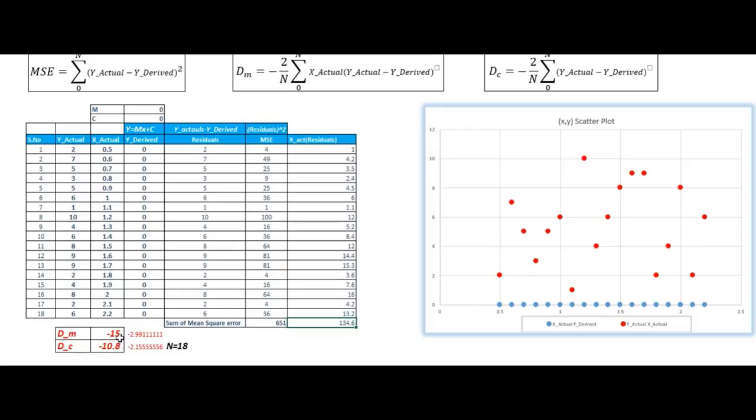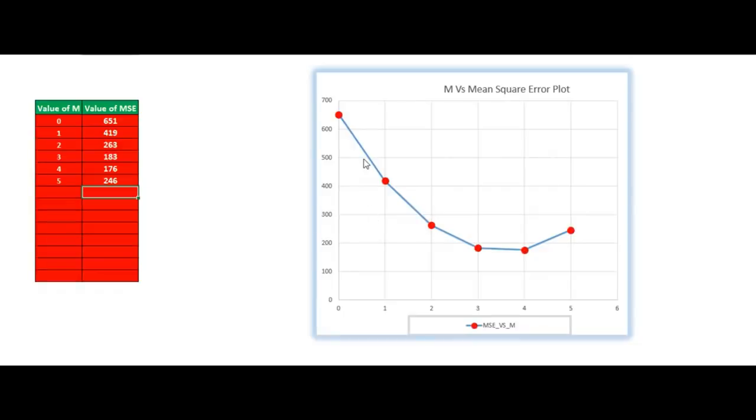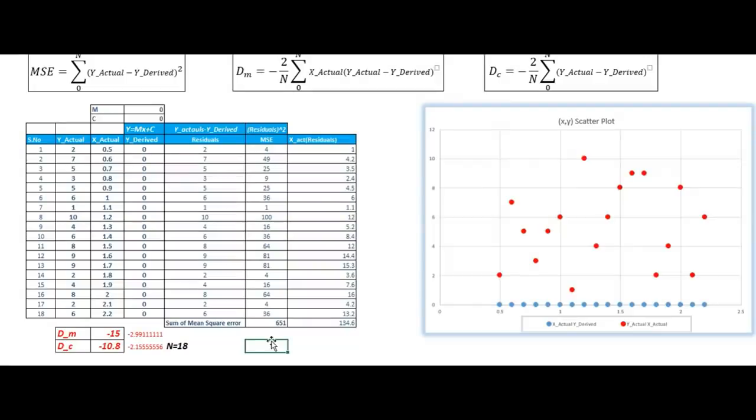For reaching out to the minima of this function, we need to reduce these values from our current m and current c. But these values are so large that we can miss out our minima and go to the further side of the curve. In the picture, you can see, if I will deduct this number with our current value, I may go to the other side of the curve. So here comes the concept of learning rate. A learning rate is a small number which gets multiplied to these slopes so that we will not cross the minima and go to the other side.